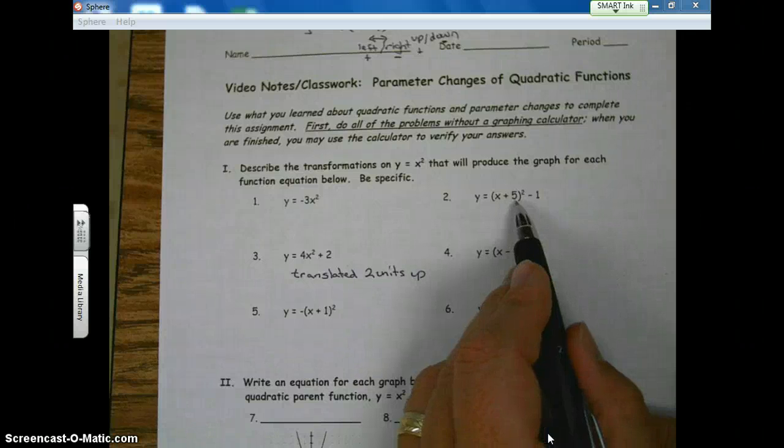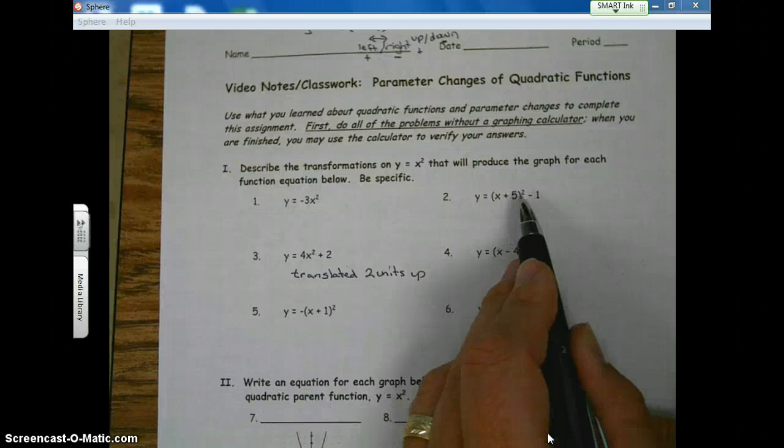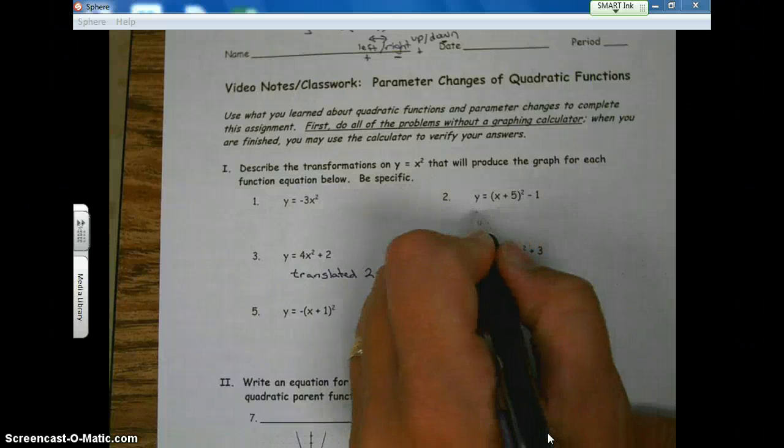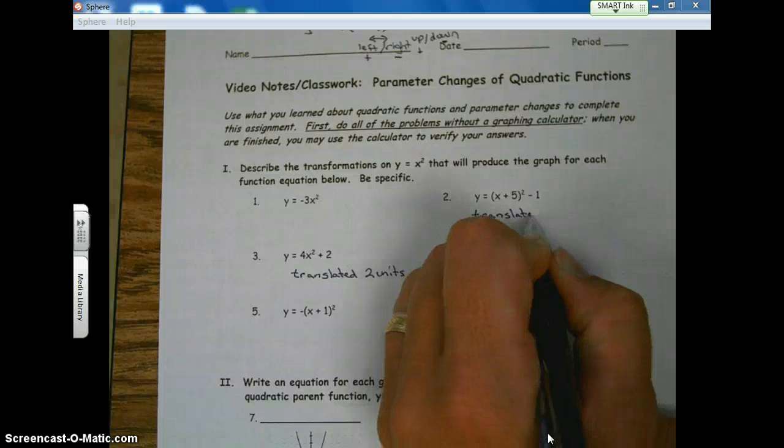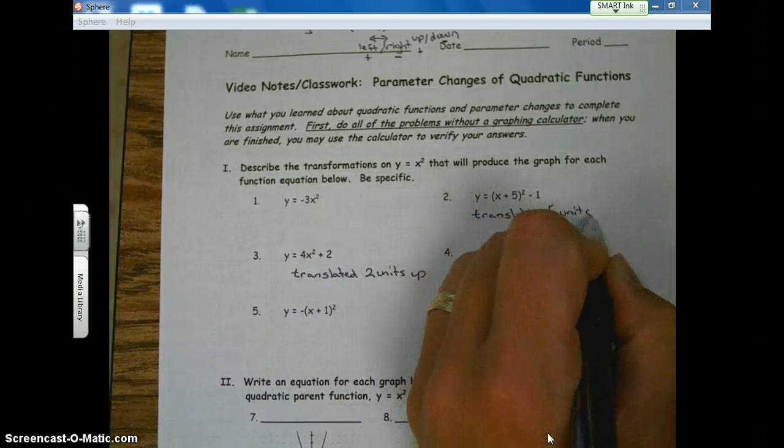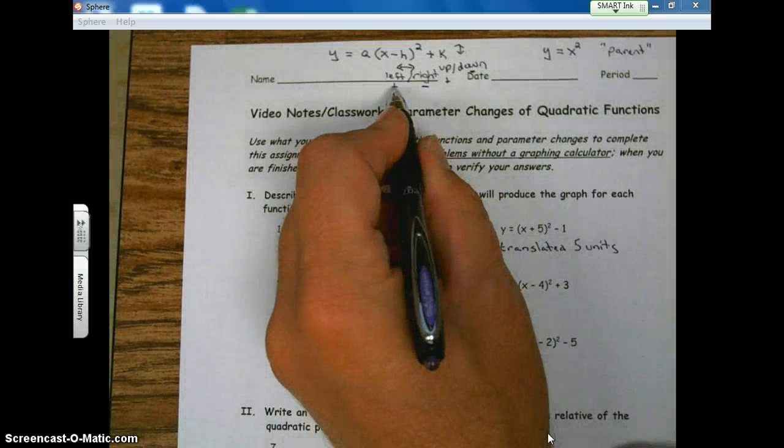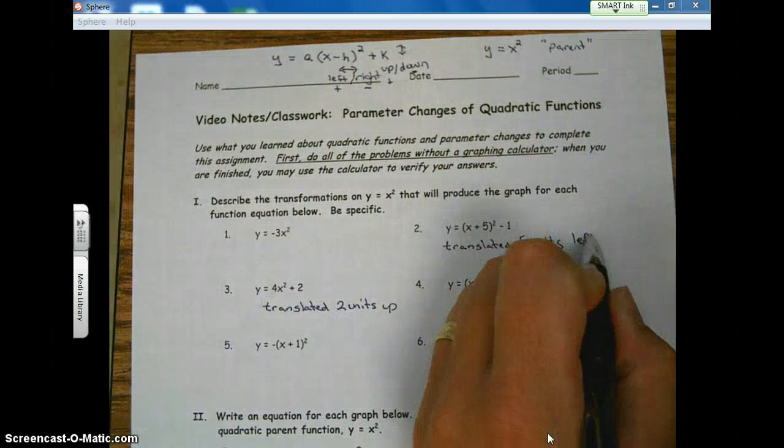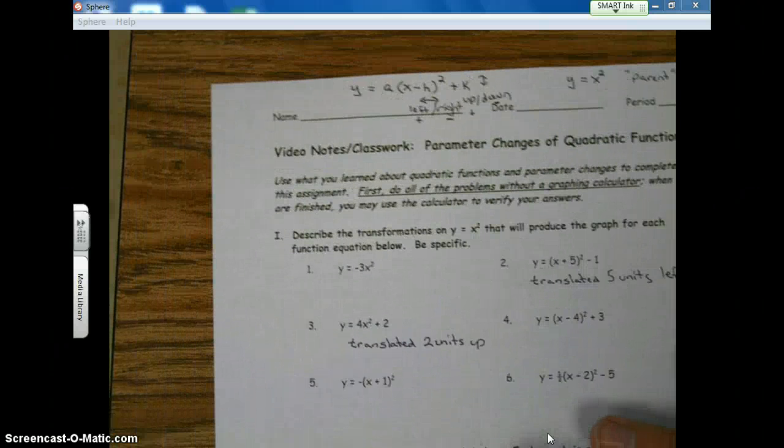Okay? h, k. h is 5. So we say that the parent function was translated 5 units. Okay, look at your symbols. Plus. Look back at your notes. Left. 5 units left.